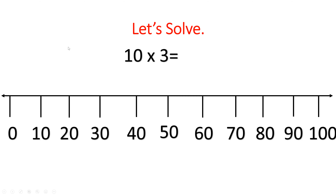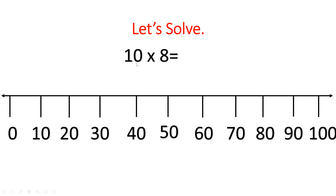Let's do another one together. 10 times 3 — you're going to move your finger along the number line three times until you get your answer: 1, 2, 3. Did you get 30? Great job. 10 times 3 equals 30. Now 10 times 8 — move your finger eight times: 1, 2, 3, 4, 5, 6, 7, 8. Amazing. 10 times 8 equals 80.